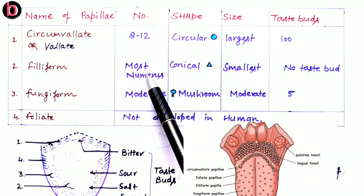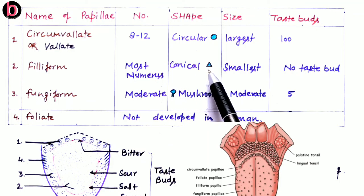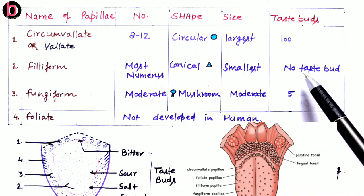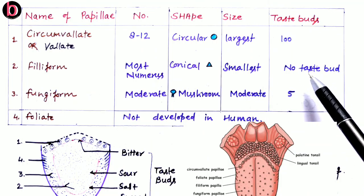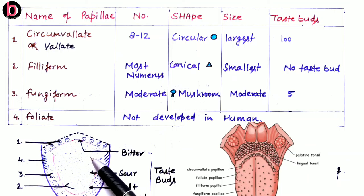The second type is filiform papillae. They are the most numerous, maximum in number, and conical in shape. They are the smallest in size, and because of their small size there is an absence of taste buds on them. In the diagram they are represented as very small dotted conical structures present throughout the tongue surface.